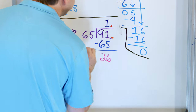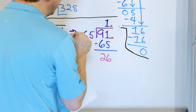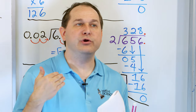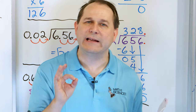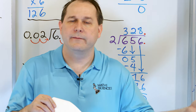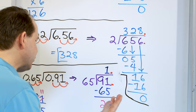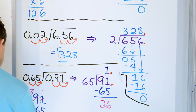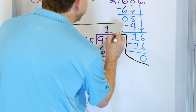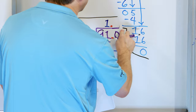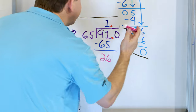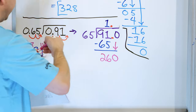Now we don't have any more digits in our problem, but we also do not have a remainder of zero. So we have to keep going. When dividing decimals, you want to get the remainder down to zero if you can. We have 91 with a decimal — we can easily add another zero without changing the problem at all. So we insert that zero, and after the subtraction we drag that zero down, giving us 260 down there.